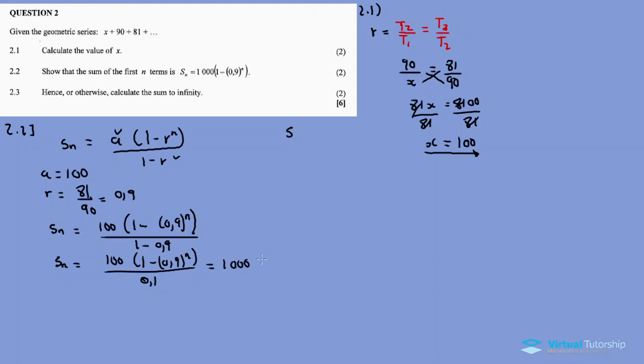This equals 100 divided by 0.1, which is 1000. So our answer is 1000 times 1 minus 0.9 to the n close bracket. So Sn equals 1000 in bracket 1 minus 0.9 raised to exponent n close bracket.